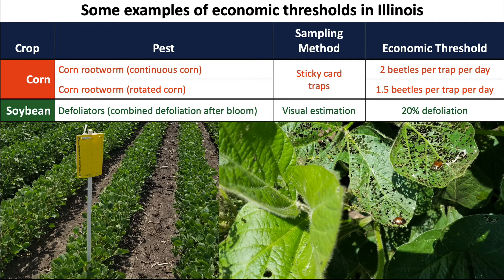When we look at defoliators in soybean — similar to the picture shown on the front page — we estimate the percent defoliation on that field. The economic threshold is 20% defoliation. When 20% of that soybean foliage has been removed by insect pests, a control action is very likely to give a positive economic return.